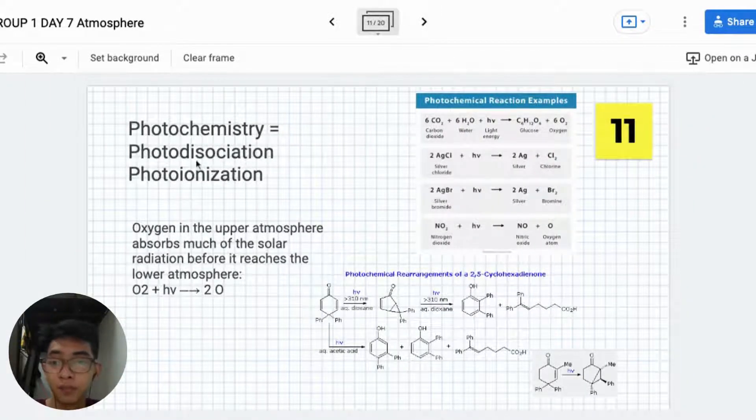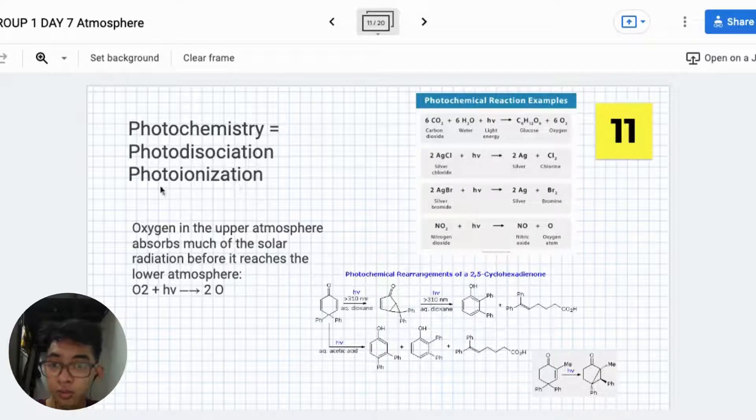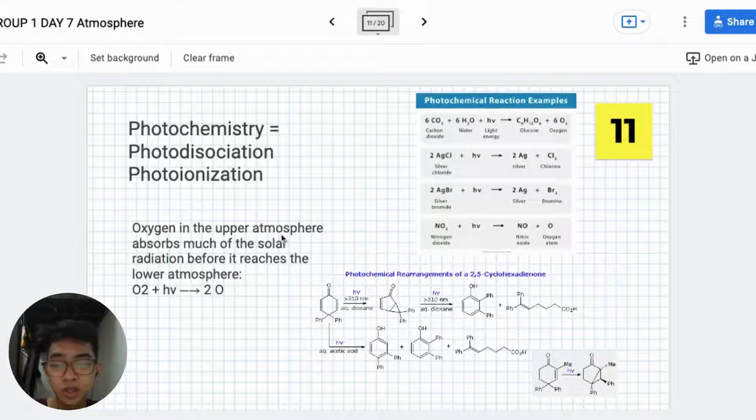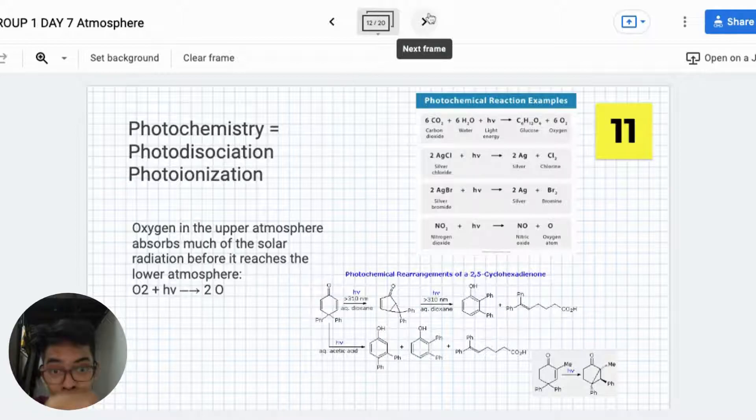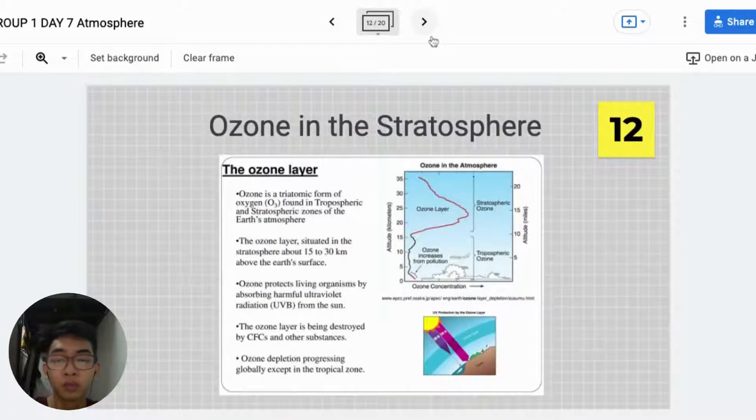Photochemistry. Photodissociation. Photoionization. Oxygen in the upper atmosphere absorbs much of the solar radiation before it reaches the lower atmosphere. And this is the ozone in the stratosphere.